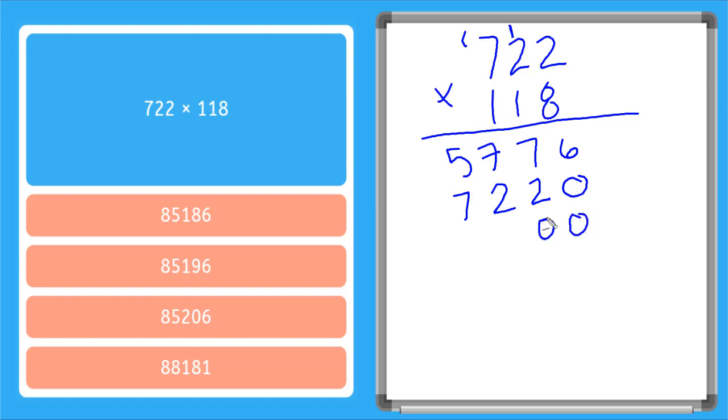Now I'm going to multiply my hundreds place on the bottom number. So I need to go one, two zeros in the bottom place. One times two is two, one times two is two, one times seven is seven.